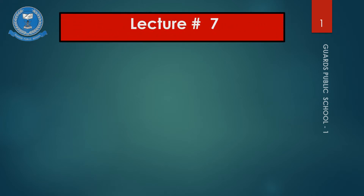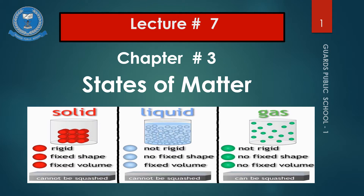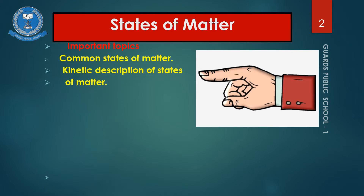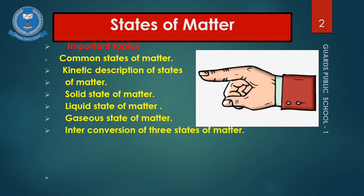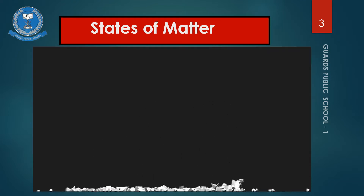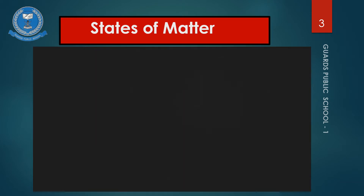Bismillah Rahman Rahim. This is lecture number seven of chapter number three: States of Matter. This is a very easy chapter and most of the topics are familiar because you already know about solid, liquid, and gas. The important topics of this chapter include common states of matter, kinetic description, solid state, liquid state, gaseous state, interconversion, Brownian movement, isotopes, and radioactivity. This picture shows different states of matter: solid, liquid, gas, and plasma.